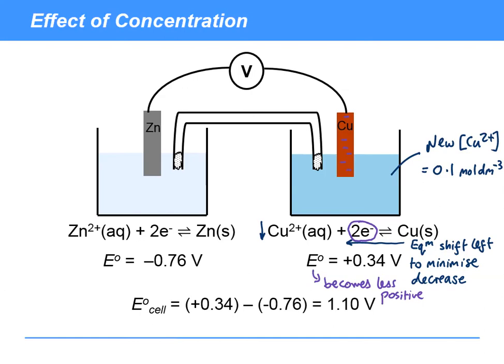Now you can actually use an equation called the Nernst equation to actually predict for this specific situation exactly what's going to happen. And it turns out that actually the new electrode potential under these conditions is actually plus 0.31 volts. And so the new E cell in this case is going to be subtracting minus 0.76, just the same, plus 1.07 volts. And so because this value here, which is a positive value, became smaller, then overall the cell potential is smaller.